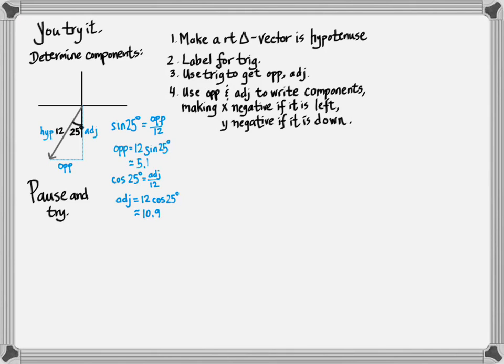Now I just need to figure out which component is x, which component is y, and whether they need to be negative. If I look here, I can see the x component, which is horizontal, is going to the left. The vector is going like this. So the x component is going this far to the left. So this has to be negative 5.1 for the x.